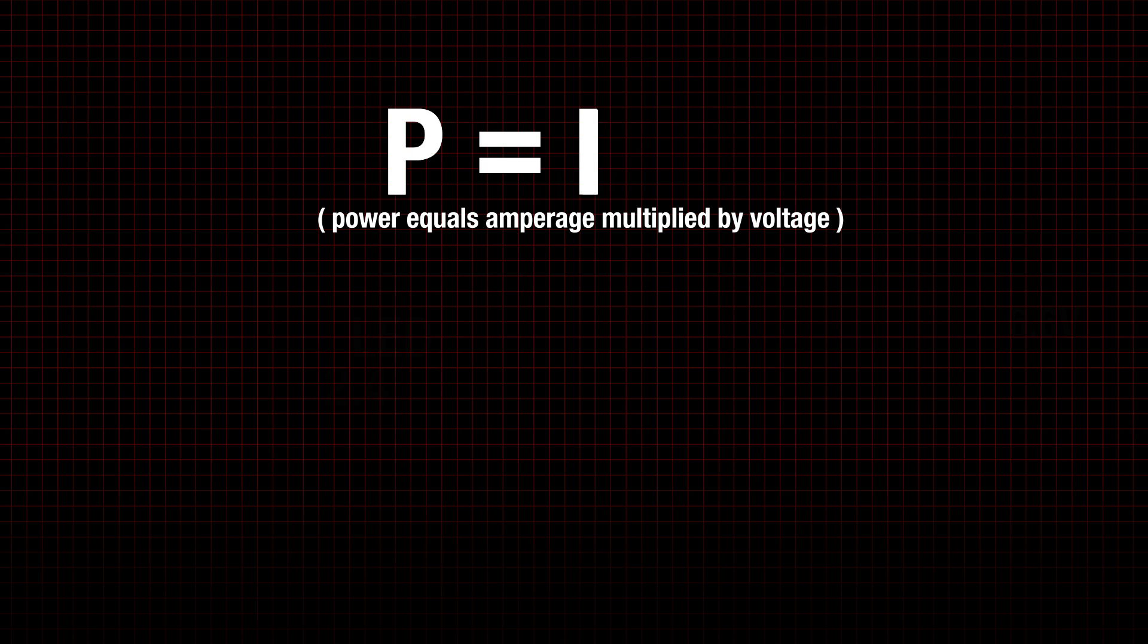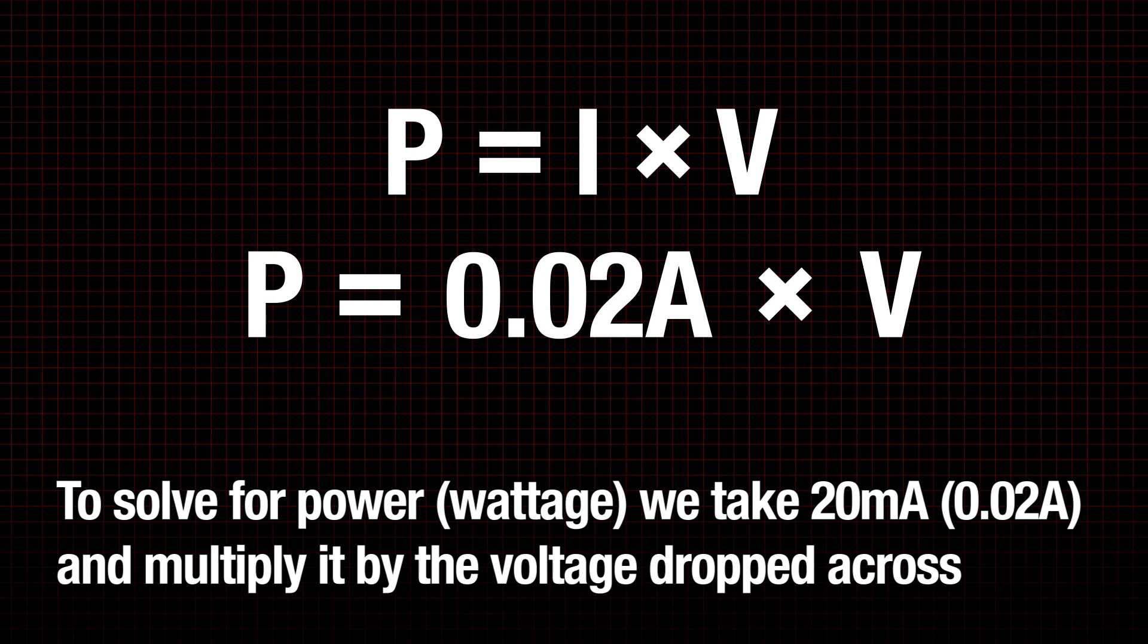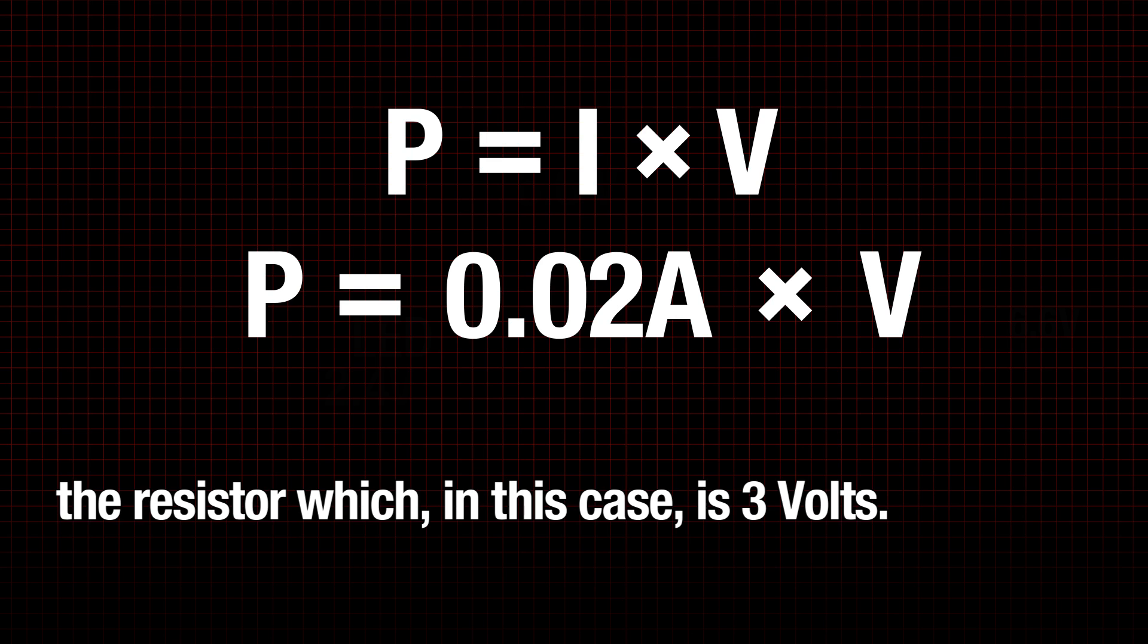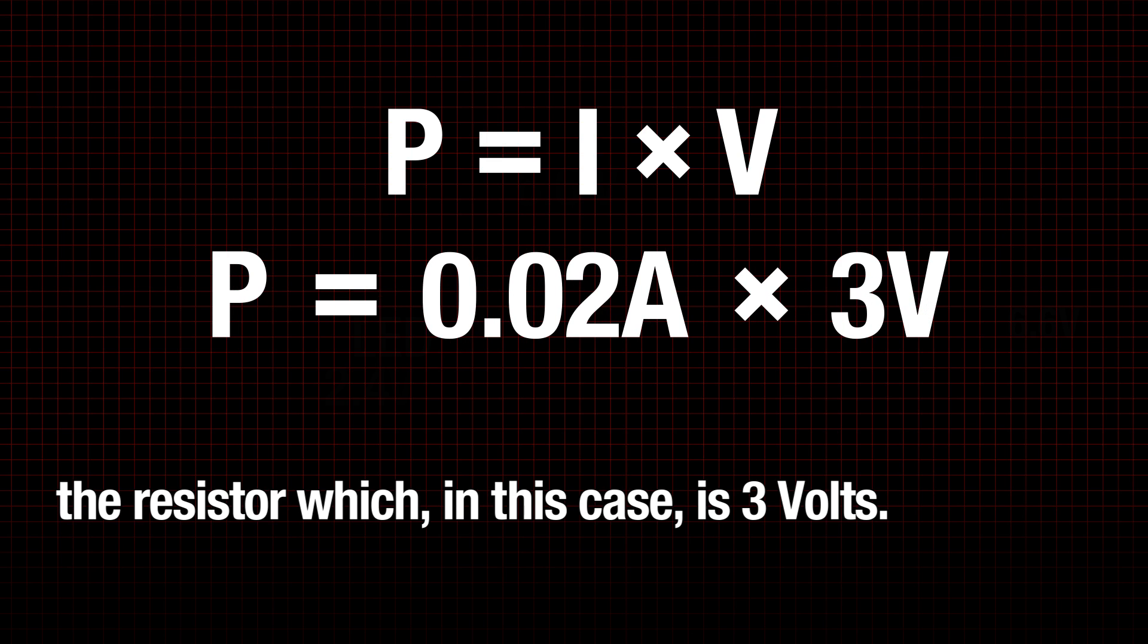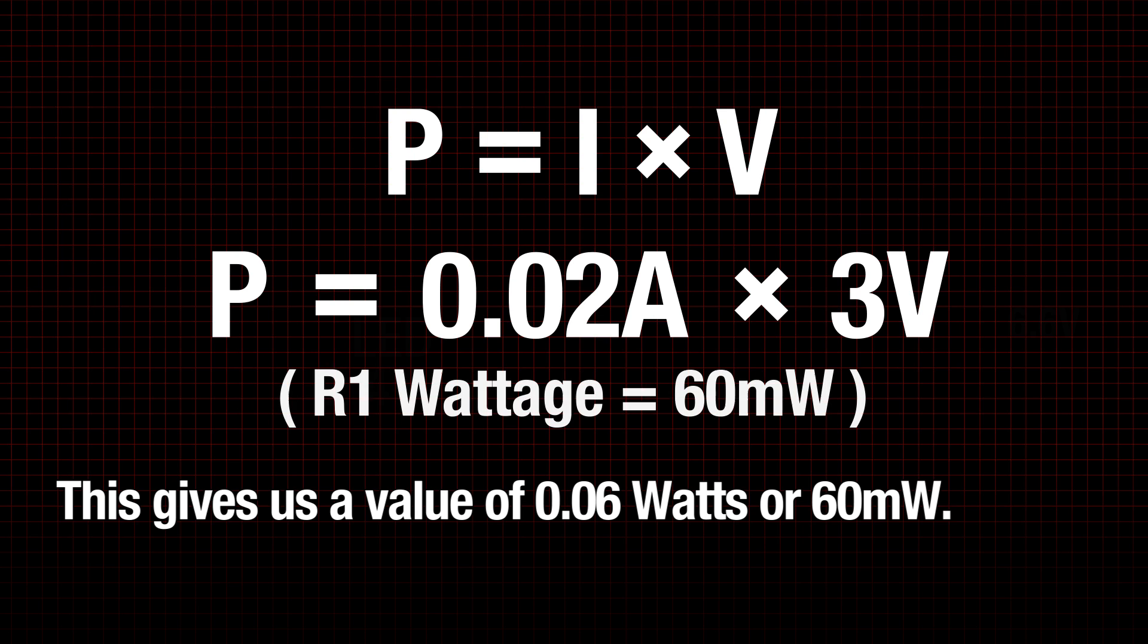The formula for wattage is power equals amperage multiplied by voltage. To solve for power, we take 20 milliamps or 0.02 amps and multiply it by the voltage dropped across the resistor, which in this case is 3 volts. This gives us a value of 0.06 watts or 60 milliwatts.